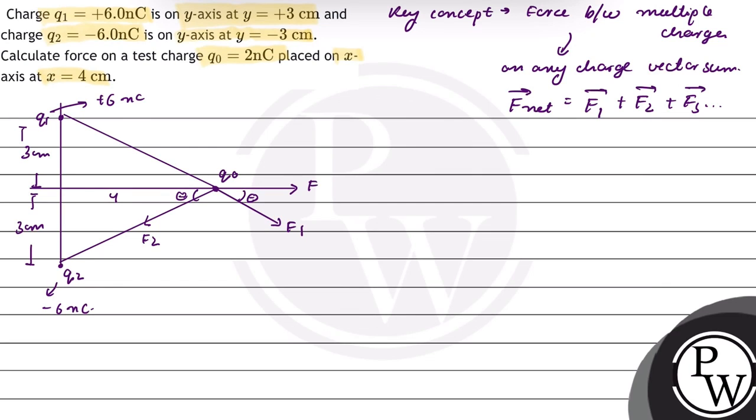Breaking the components, along x-direction it will be F cos theta and F cos theta which will cancel each other. In y-axis direction it will be F sin theta plus F sin theta. So net force will be equal to 2F sin theta.